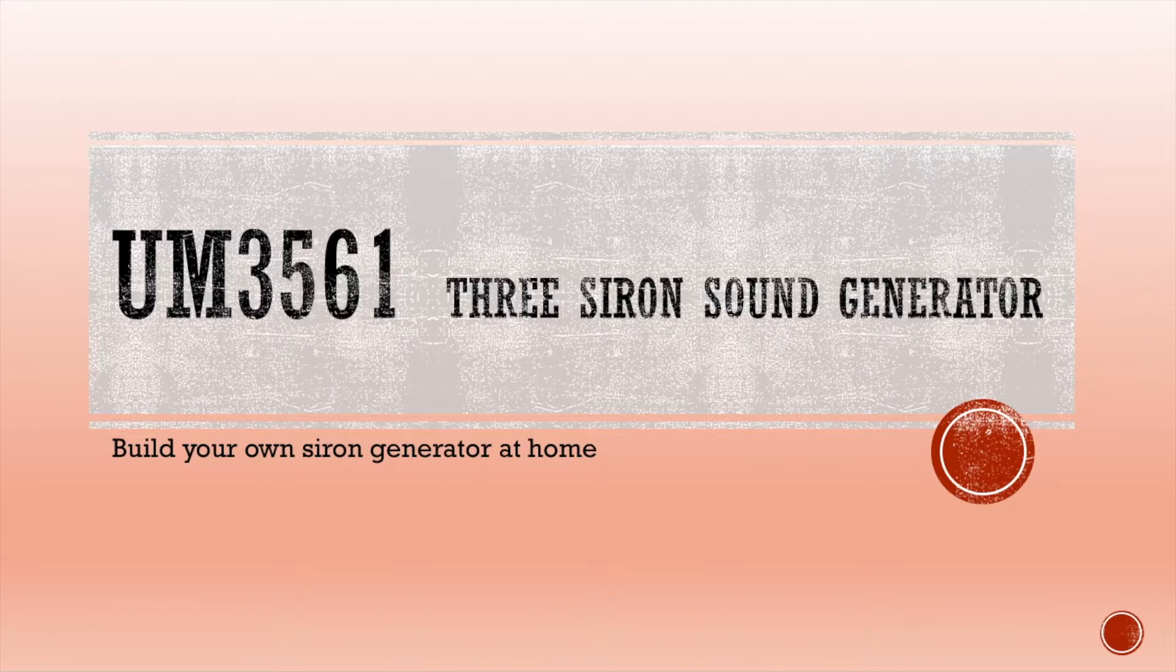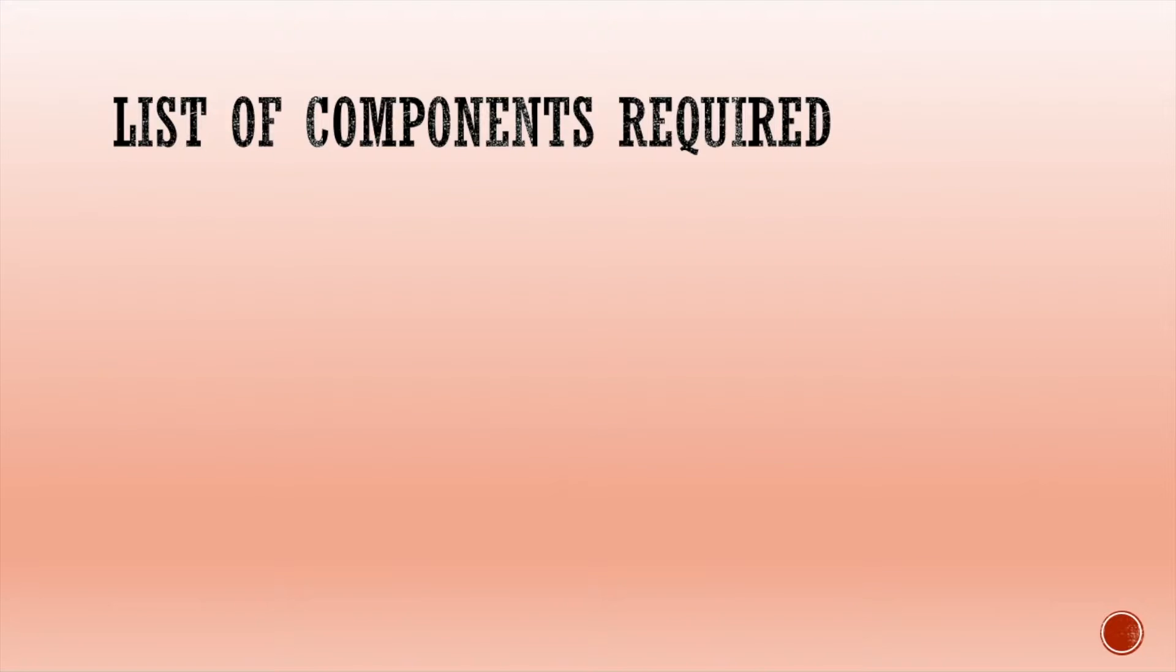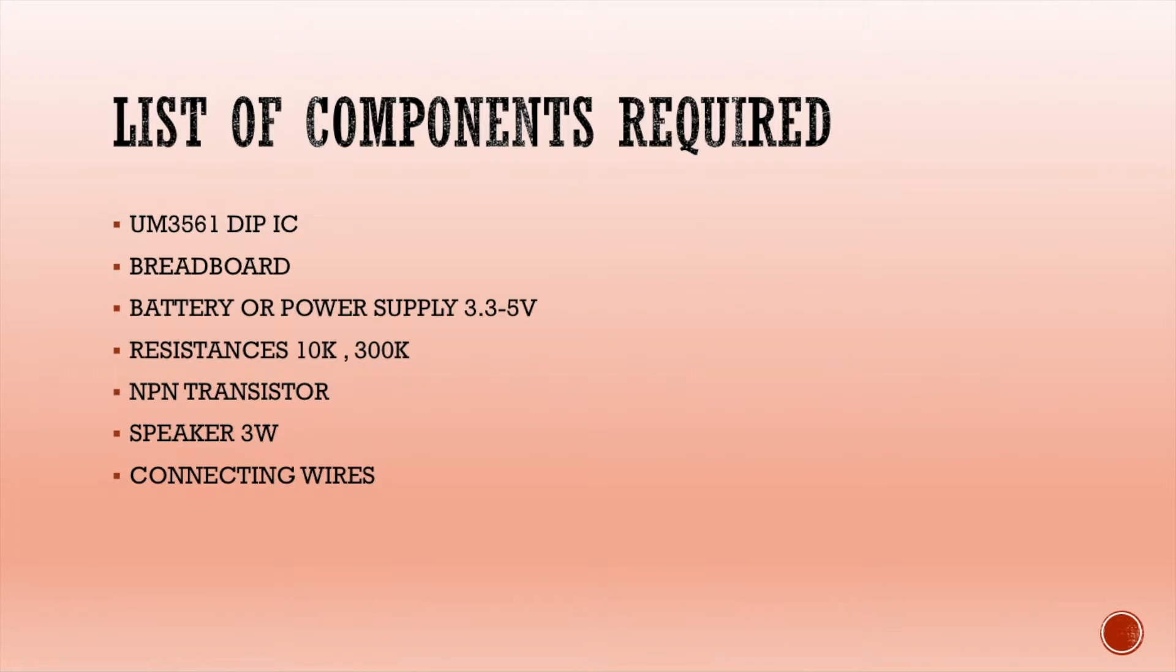These are the list of components required to make the UM3561 siren generator. We need the UM3561 DIP IC, which is an 8-pin DIP IC. We also need a breadboard, which can be an 800-point or 400-point breadboard, depending upon which one is available in your area.